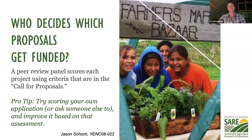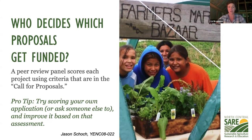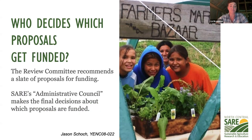I'm really proud of our peer review panel process. We have a group of educators who assess, score, and debate about which projects to fund - and the same is true for other grant programs, where farmers and ranchers review farmer grants. In our call for proposals, we have the full scoring criteria that our reviewers use. My pro tip: try scoring your own application, or ask someone else who can be objective to do it and improve it based on that assessment. The review committee then puts together a slate of proposals and gives it to our administrative council, who make the final funding decisions.